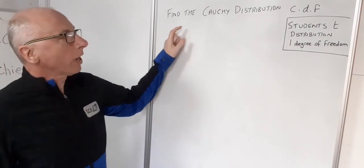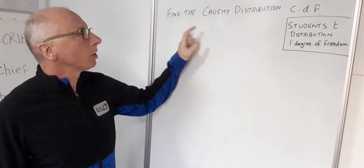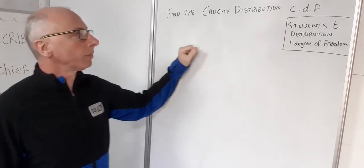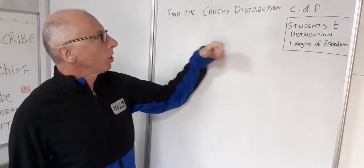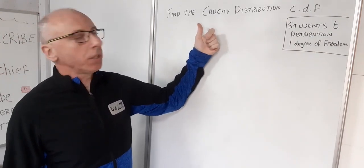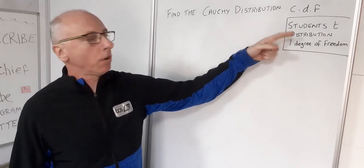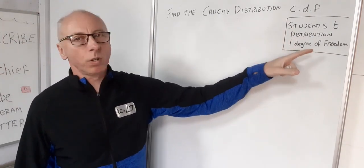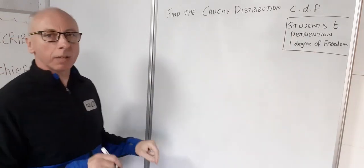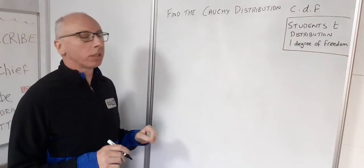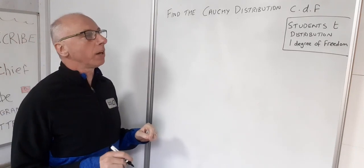In this video we're going to work out how to find the Cauchy distribution's cumulative density function. In the last video we showed how to find this Cauchy distribution's PDF from the student t distribution with one degree of freedom. I've got a link below to show how we did that because that's an interesting set of calculations.